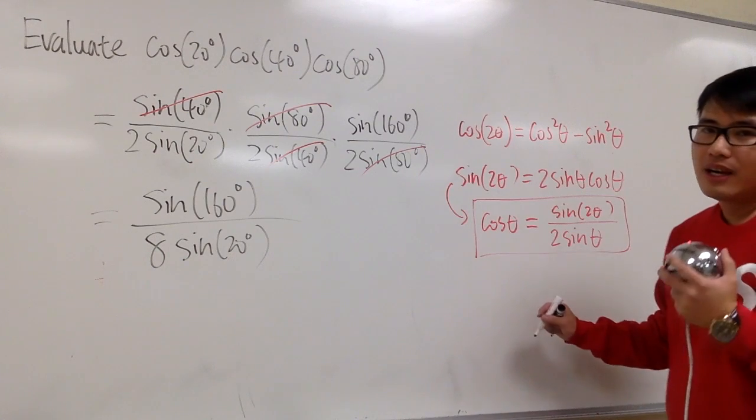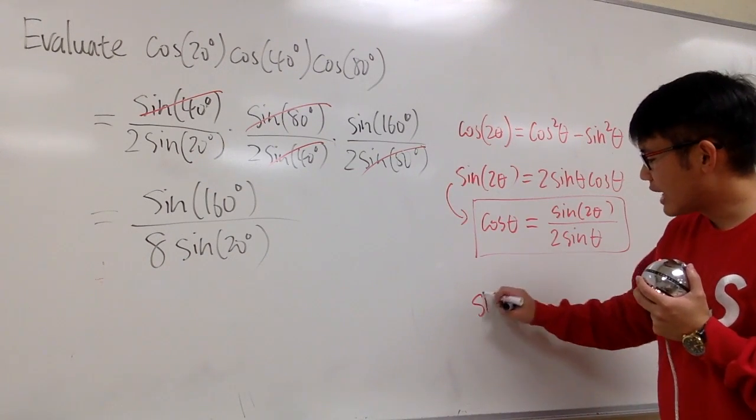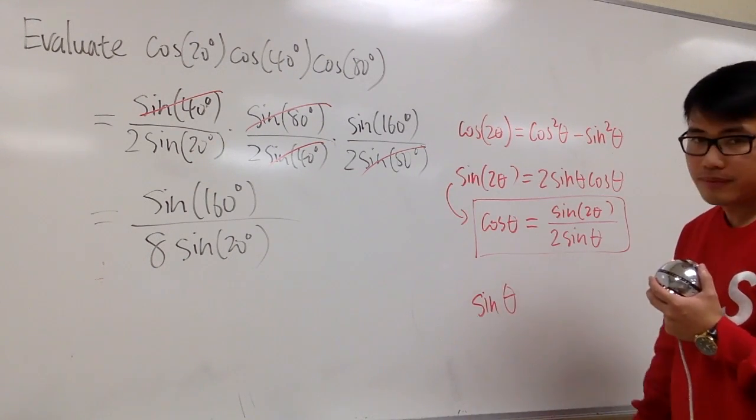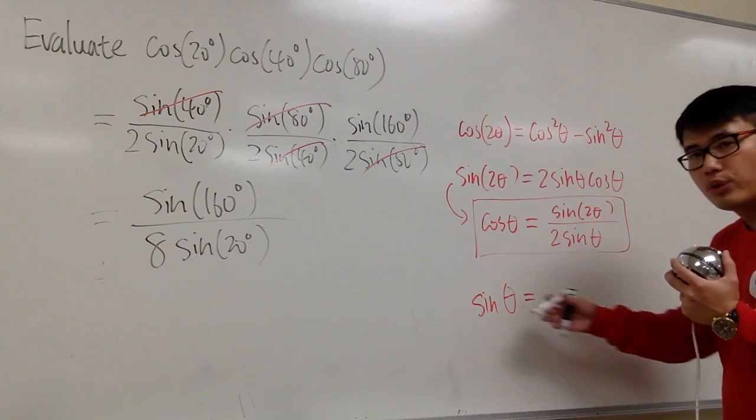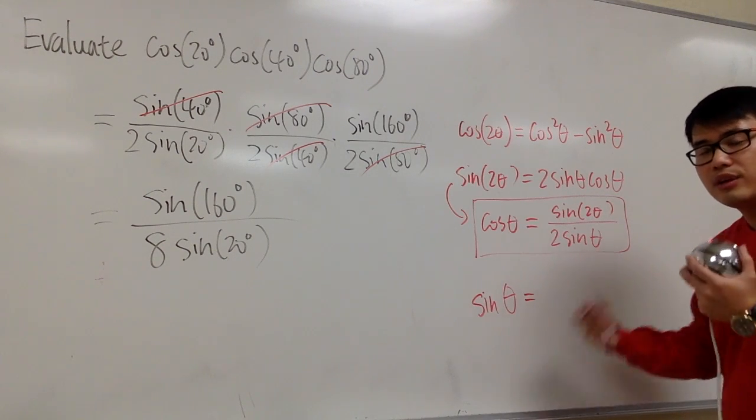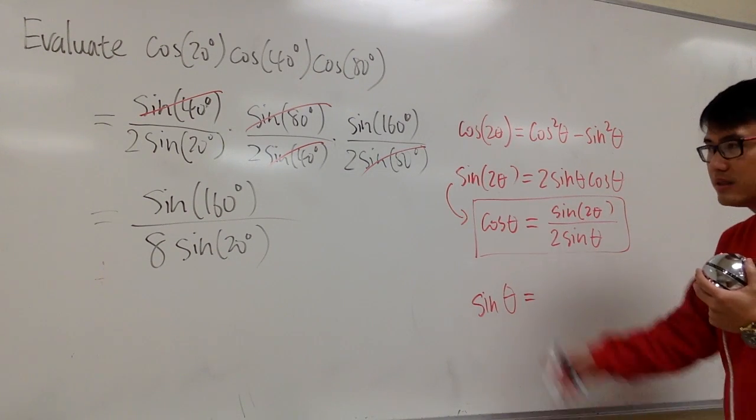And there's an identity. I wanted to put it down for you guys. Whenever you have sine of θ, if this, right? The other angle, when you add this and that, if the angle is able to be 180, it's actually the same value.